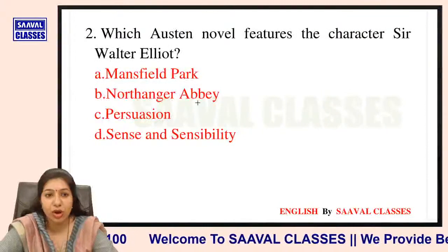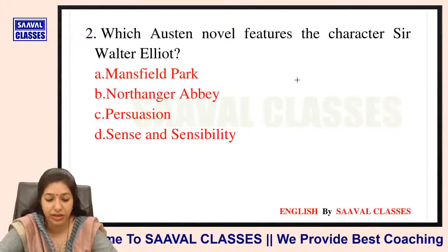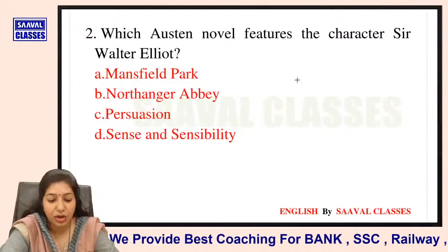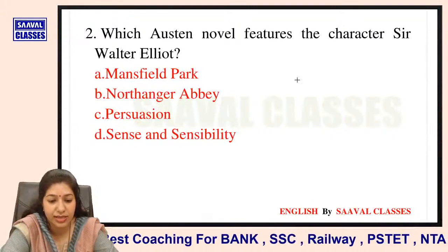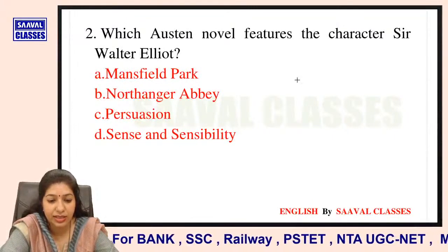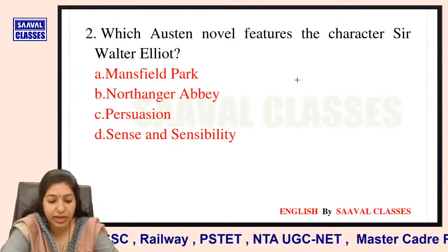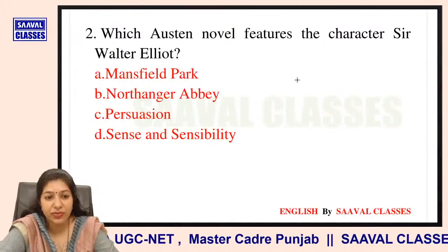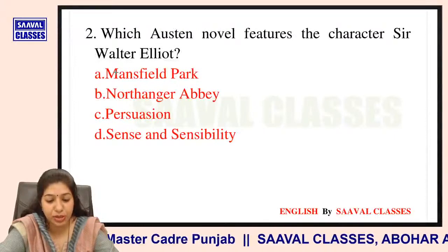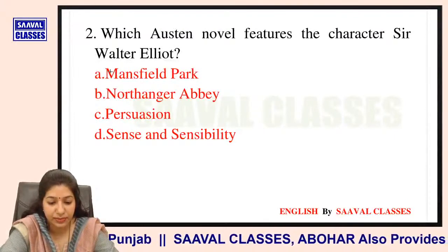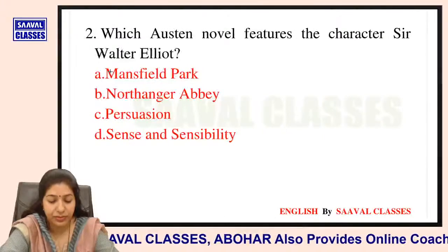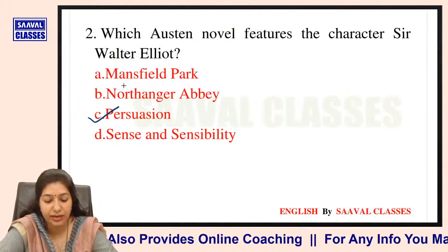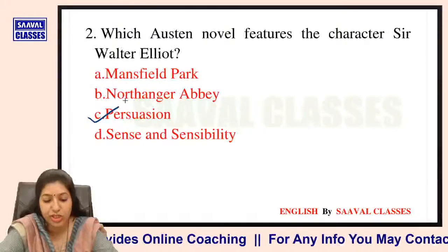Question number 2: Which Austen novel features the character Sir Walter Elliot? Jane Austen ke kaun se novel ke character hain — Mansfield Park, Northanger Abbey, Persuasion, ya Sense and Sensibility? Sir Walter Elliot is the main character in Persuasion. He is the main character in Persuasion.